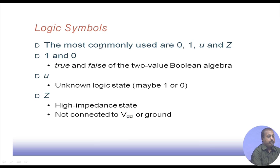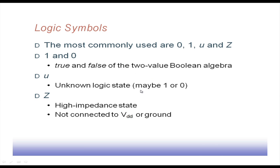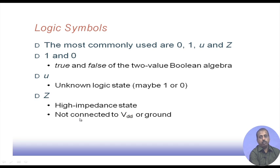Most of the time we use four symbols: 0, 1, U, and Z. 0 and 1 are from binary logic — true and false in Boolean algebra. U means unknown: when we do not know the value at a point in the logic circuit, it may be 1 or 0. Z is the high-impedance state — the node is neither connected to VDD nor to ground. So U means it is either 0 or 1 but unknown, while Z means it is not driven to either value.